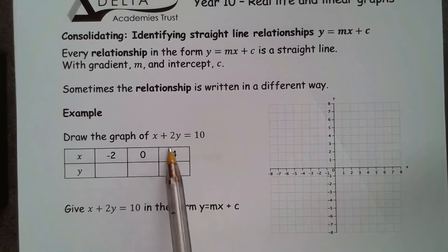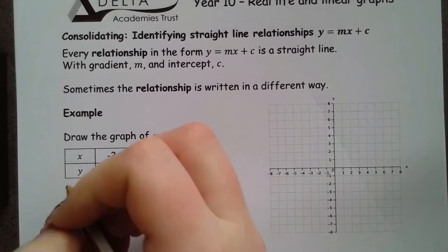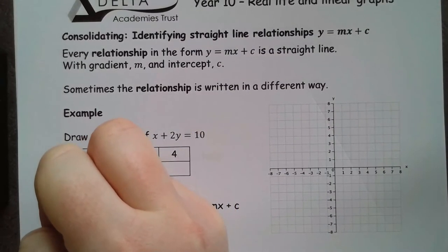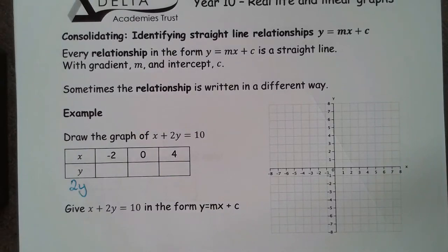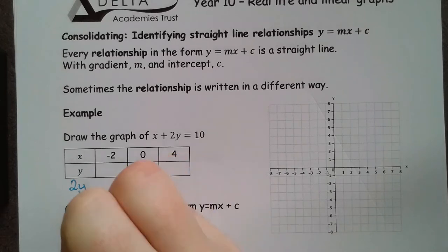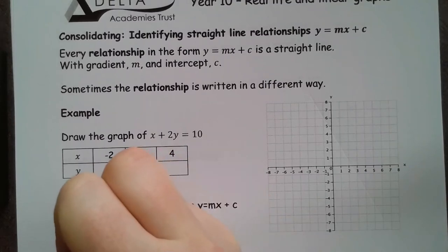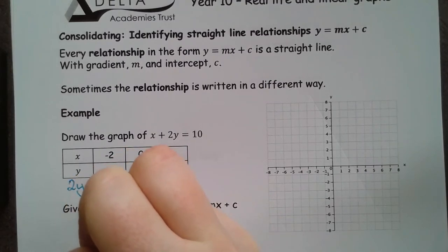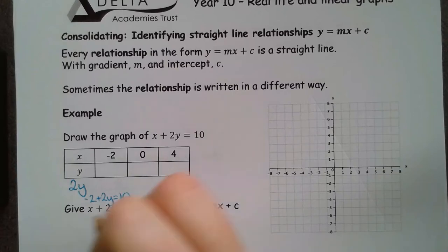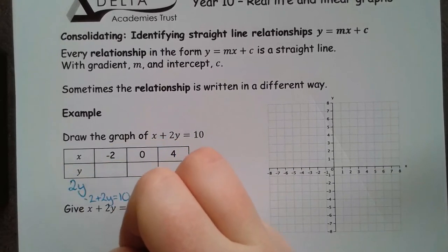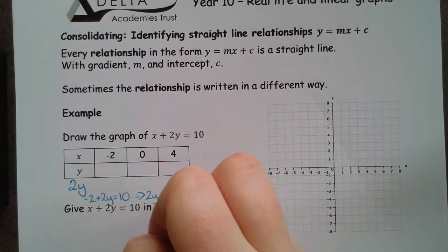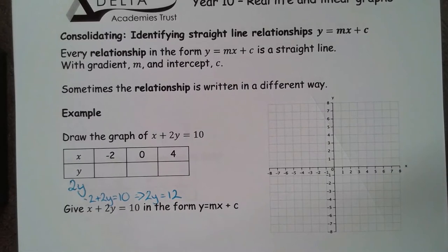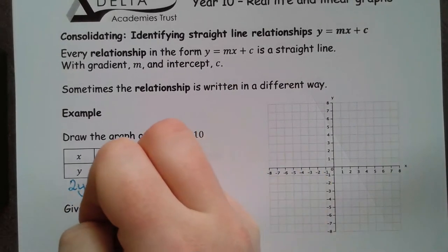So, this time it's the y that's changed. So, I'm going to pop 2y in as an extra row on my table. If I substitute in, in this section, I get minus 2 plus 2y is equal to 10. That means that 2y is equal to 12. So, 2y is 12. That means that y must be 6.